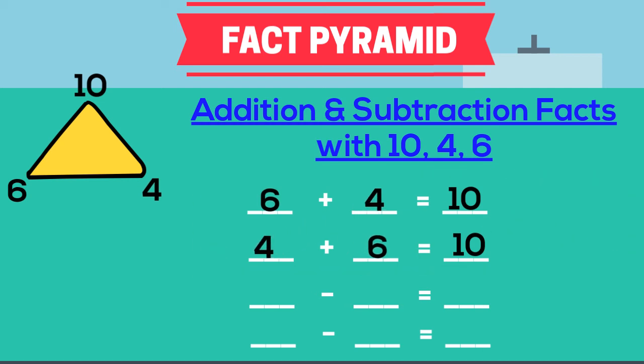For subtraction facts, we will simply put the biggest number 10 in the minuend position of the two remaining equations. For the first one, 6 becomes subtrahend and 4 becomes the difference. And for the second one, 4 becomes the subtrahend and 6 is the difference. Four equations without remembering the fact families.